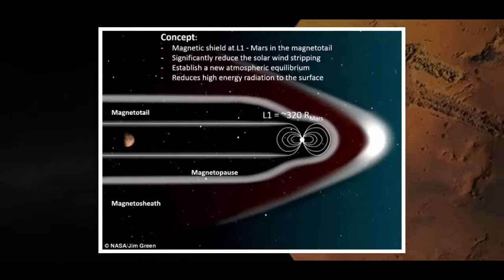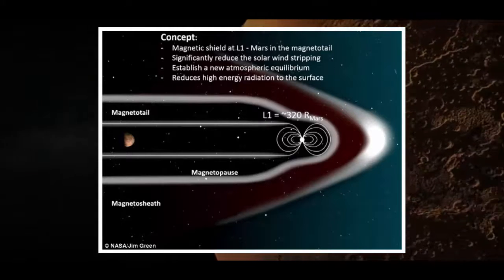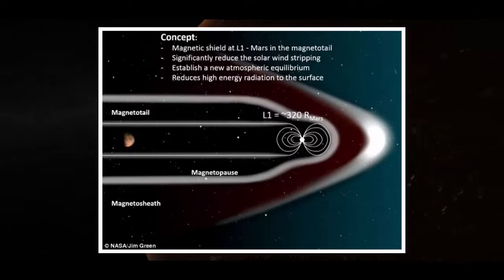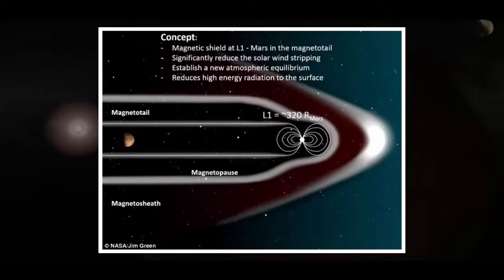A NASA talk given at the recent Planetary Science Vision 2050 workshop presented a potential way to make Mars more habitable by giving it an artificial magnetic field. This could protect human residents from radiation and bring back some of the planet's ancient oceans.